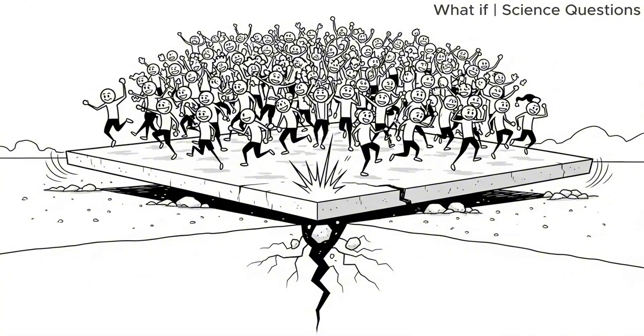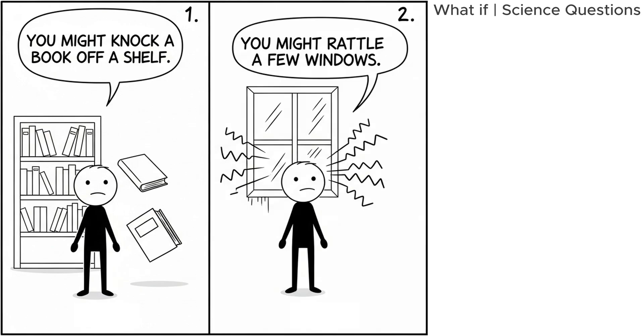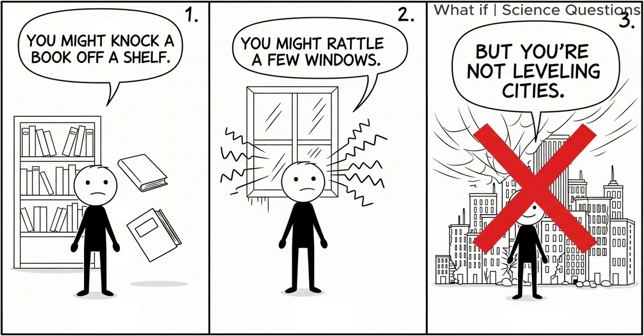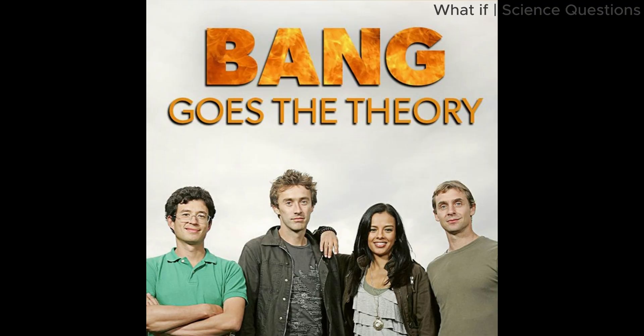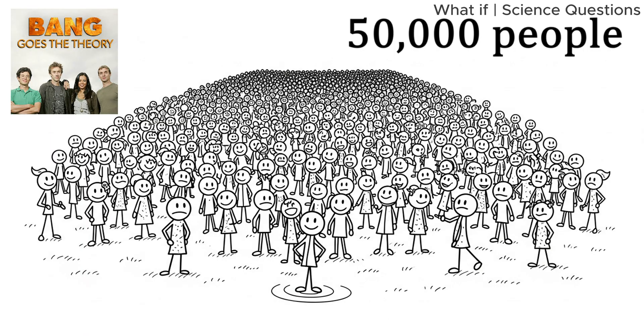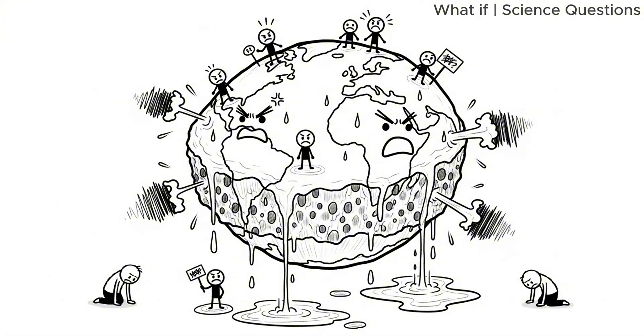The key word here is small. You might knock a book off a shelf. You might rattle a few windows. But you're not leveling cities. In fact, some scientists have done small-scale versions of this. In 2011, the British TV show Bang Goes the Theory tried to simulate this exact event with 50,000 people. The ground barely shook. It turns out Earth is very good at absorbing shock. It's basically a giant sponge, only made of molten rock and disappointment.